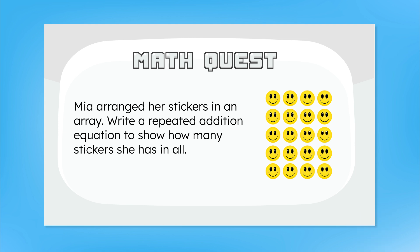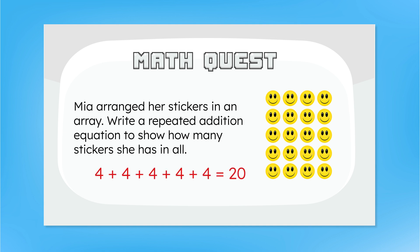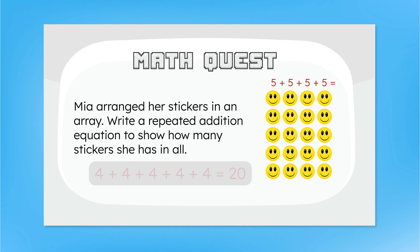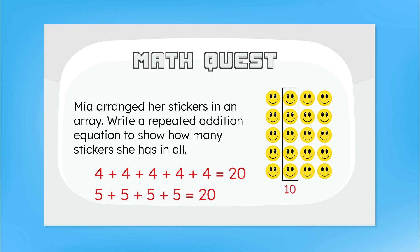What did you get? Whether you used rows or columns to add, our sums should be the same. To find the total using rows, that's four stickers in each row and five rows in all, so we add four five times. Four plus four equals eight, plus four more is twelve. Adding down the ones place we get ten, we regroup and add the tens — one plus one is two. That's twenty stickers in Mia's array. Or: four plus four plus four plus four plus four equals twenty. If you chose to use columns, we can count five stickers in every column and four columns total. That's five plus five plus five plus five, which is also twenty. And if we skip count the columns: five, ten, fifteen, twenty again.